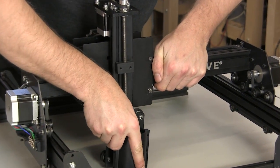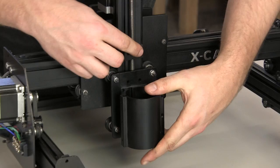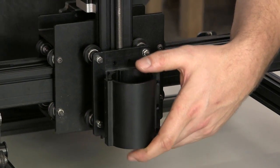Slide the spindle mount onto the Z-axis. If you're having trouble, check the orientation of your eccentric nuts.